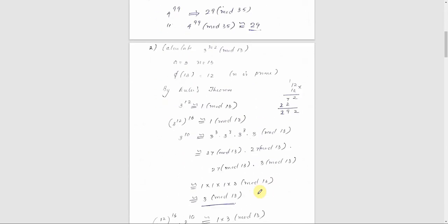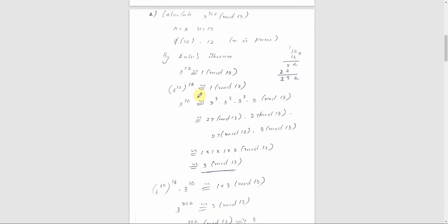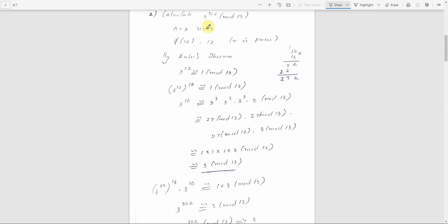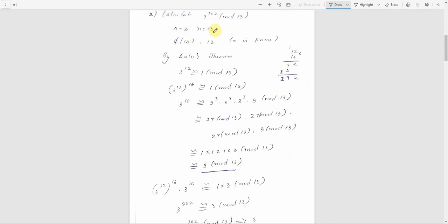Moving on to the second question: calculate 3 raised to 302 mod 13. Here a equals 3 and n equals 13. The GCD of 3 and 13 is 1, so we can apply Euler's theorem.